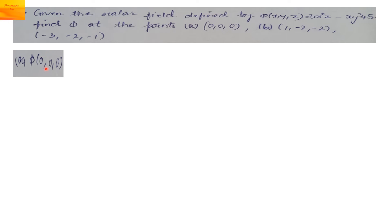Phi of 0, 0, 0, which says that X is 0, Y is 0, and Z is 0. Substituting the values of X, Y, Z as 0 in this particular function, we get this. And the final answer is 0.